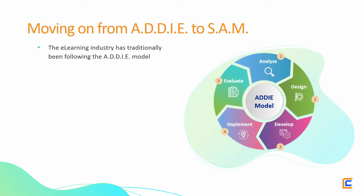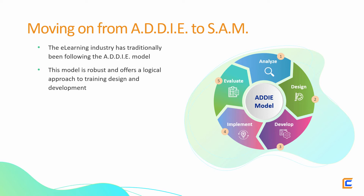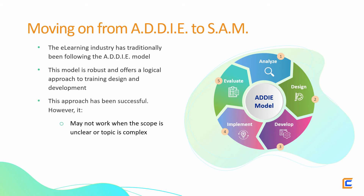In most cases, the e-learning or learning and development industry has been traditionally following the ADDIE model for designing and developing courseware. This model is great, robust, and offers a logical approach to training design and development. As we have seen from the number of effective courses we've developed using the ADDIE model, this approach works. However, when we don't have clarity on the scope of the training, or when we are developing a course on a complex topic, we tend to require more revisions to the course content during development. This model is also linear like the waterfall model, and this is where the ADDIE model tends to lack flexibility.